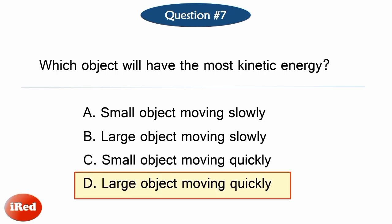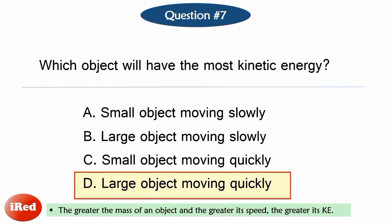The correct answer is Letter D, large object moving quickly. Kinetic energy is dependent on mass and speed. The greater the mass of an object, and the greater its speed, the greater its kinetic energy.